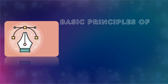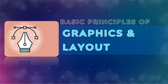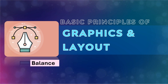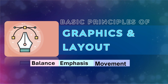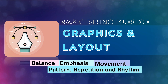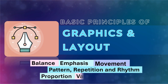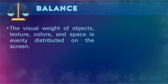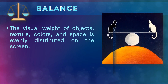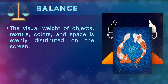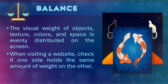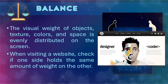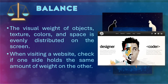Here are the basic principles of graphics and layout. We have balance, emphasis, movement, pattern, repetition and rhythm, proportion, and variety. First is balance — the visual weight of objects, texture, colors, and space is evenly distributed on the screen. When visiting a website, check if one side holds the same amount of weight as the other. Also, the colors should have a similar visual weight.